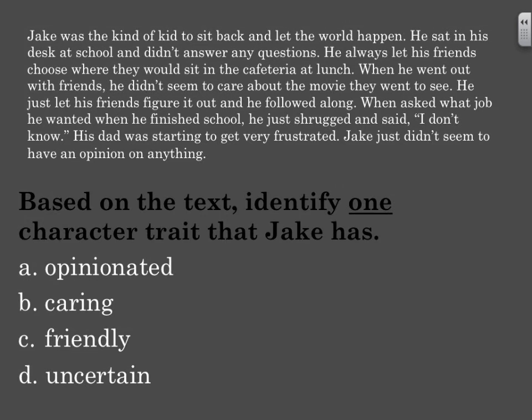In this multiple choice question, you must carefully read the passage and then determine your answer based on the evidence in the text. Jake was the kind of kid to sit back and let the world happen. He sat in his desk at school and didn't answer any questions. He always let his friends choose where they would sit in the cafeteria at lunch. When he went out with friends, he didn't seem to care about the movie they went to see — he just let his friends figure it out and he followed along. When asked what job he wanted when he finished school, he just shrugged and said 'I don't know.' His dad was starting to get very frustrated. Jake didn't seem to have an opinion on anything.